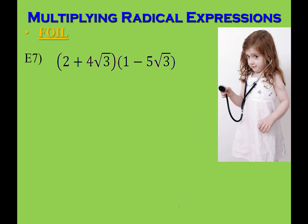The next thing to discuss is foiling. Foiling with radicals isn't hard, but it requires a sound understanding of all the properties we've talked about: multiplying, adding and subtracting with radicals, and working with normal numbers all at the same time. Looking at the first example: 2 times 1 is 2, and then 2 times negative 5 square roots of 3.